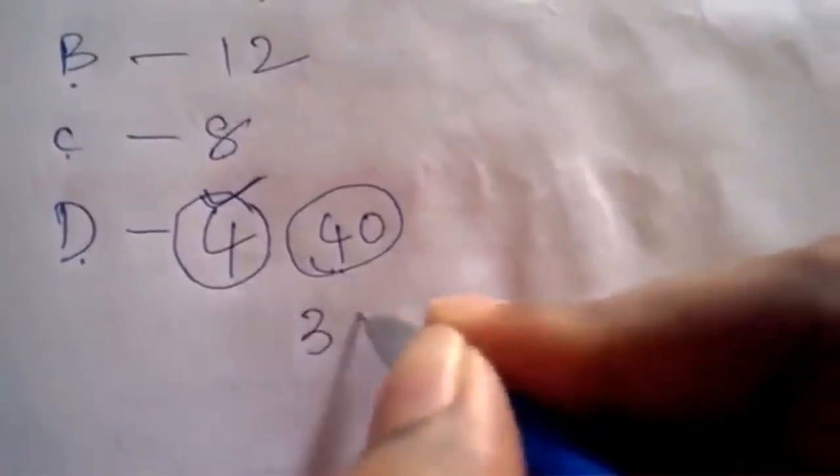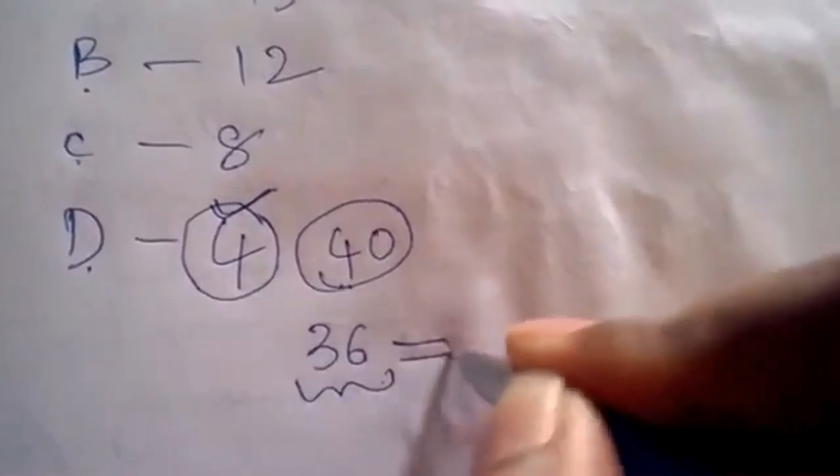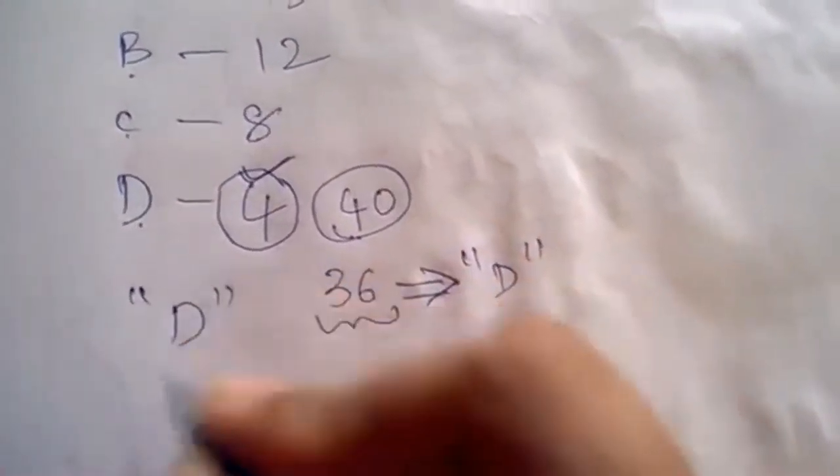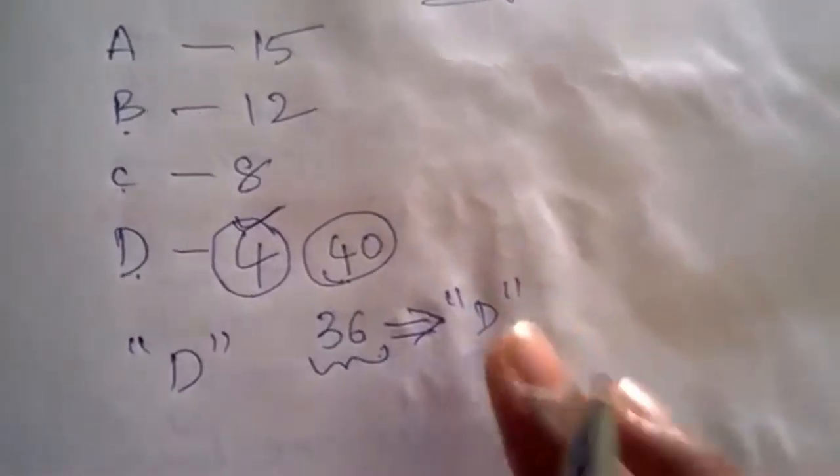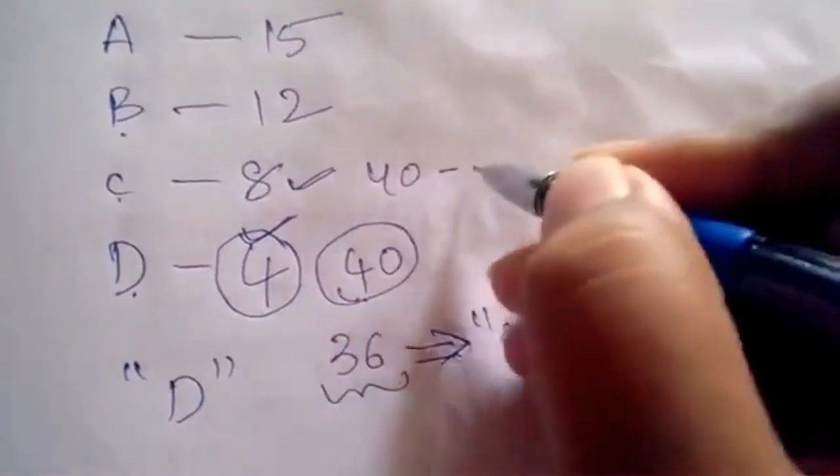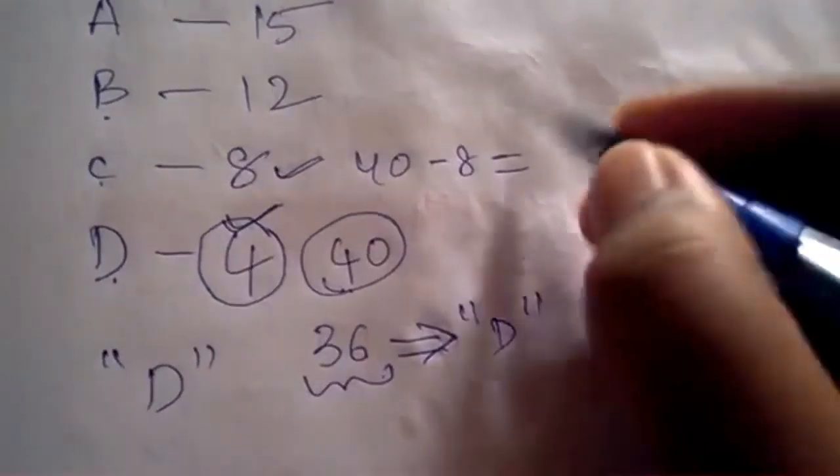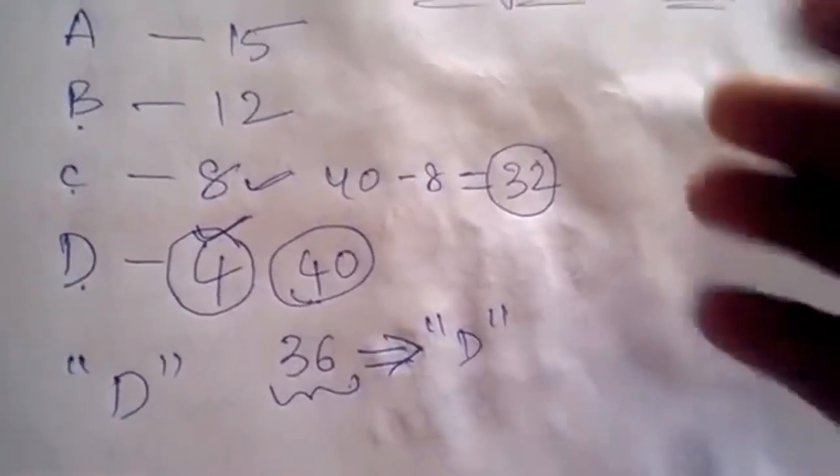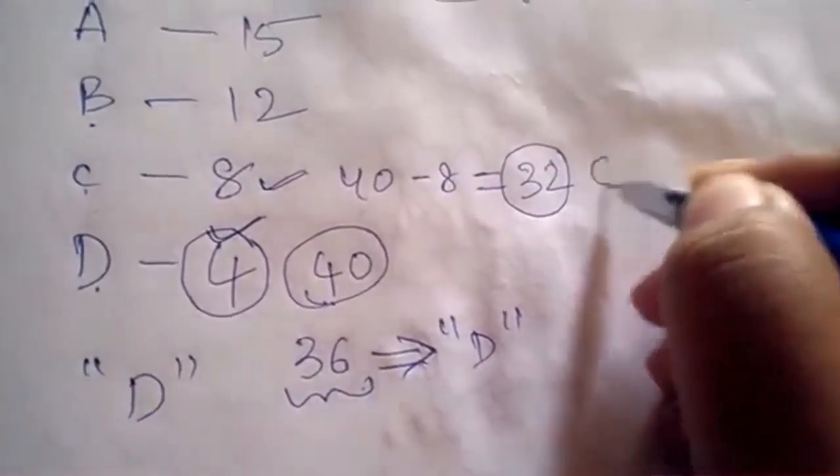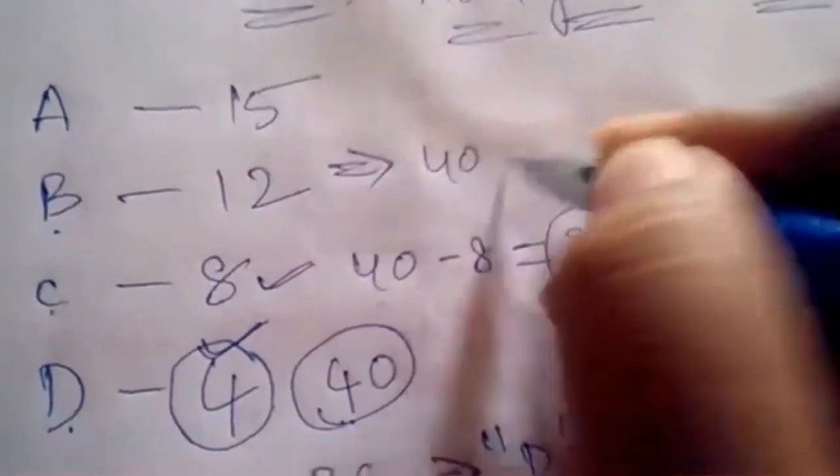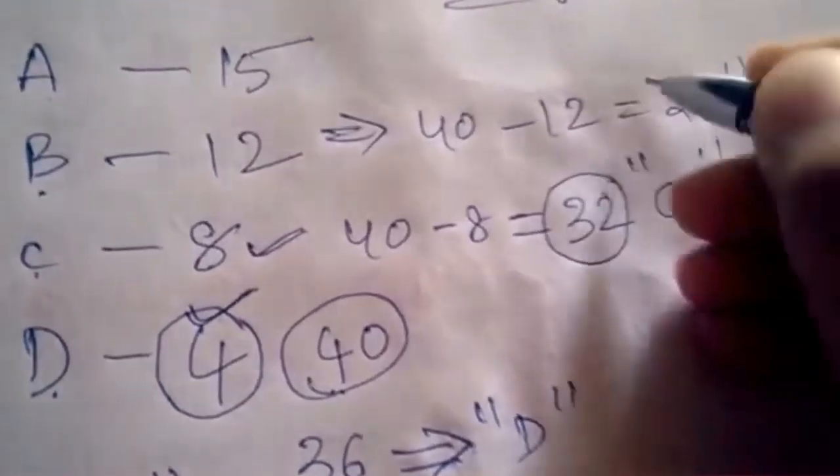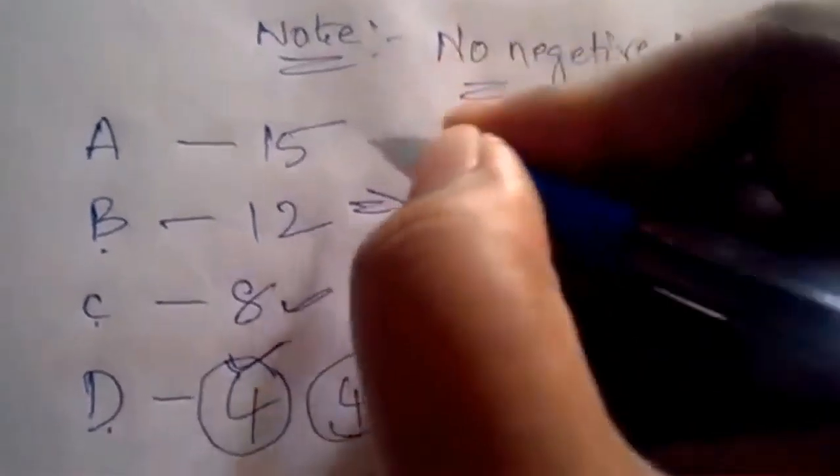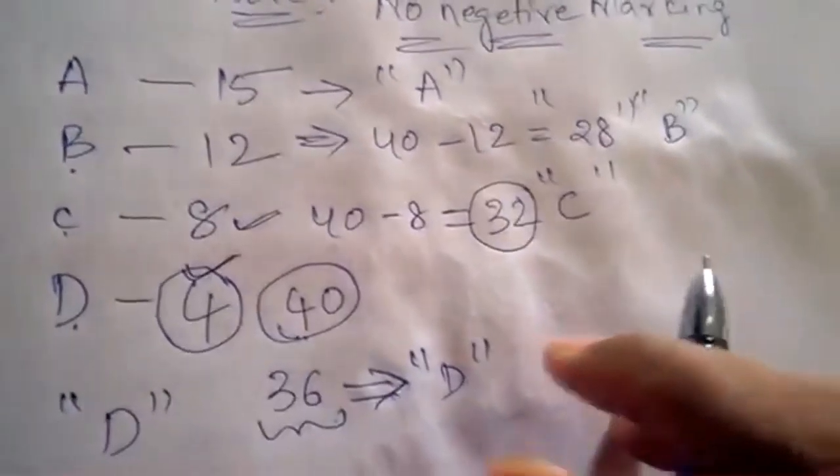So actually 40 questions will have option D, but you answered only 4 as D. So remaining 36 questions in the question paper are having D as option. So blindly guess most of the options as D. Later deduct 40 minus 8, you'll be getting 32. So answer 32 questions in the question paper as C. Again, 40 minus 12 is 28. So answer 28 of the unanswered questions with option B, and the remaining answer them as A.